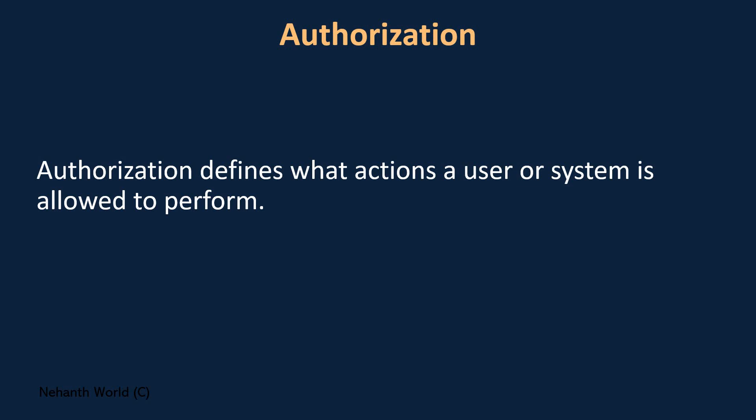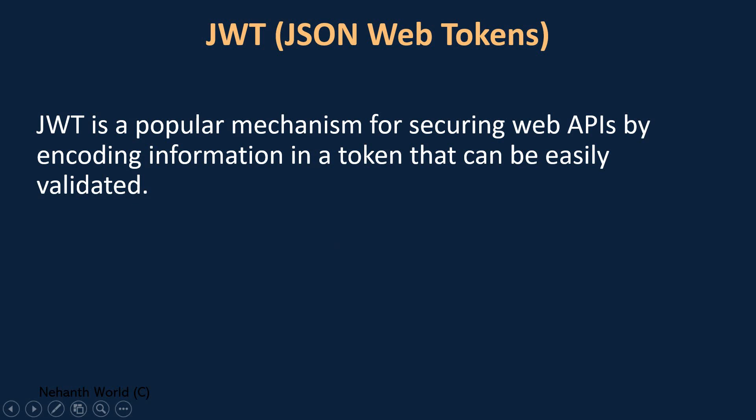That's about authentication and authorization. Once we know these, we need to see what is JWT. JWT stands for JSON Web Tokens. JWT is a popular mechanism for securing Web APIs by encoding information in a token that can be easily validated. In this JWT mechanism, our WebAPI server will generate a token and share it with the client. When the client wants to access any endpoint or resource, he needs to come back with that particular token. Then only that resource or action method will be accessed; otherwise it will be denied and the server will respond with a 401 Unauthorized status code. In the next video, we will discuss JWT in detail — what is JWT and how it works.